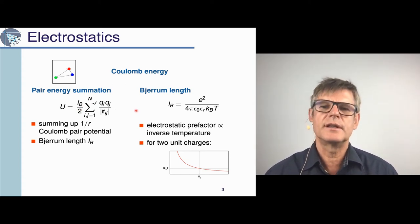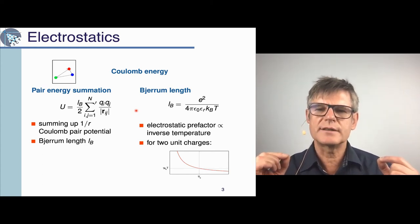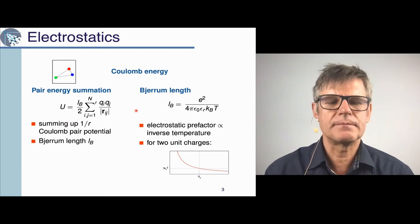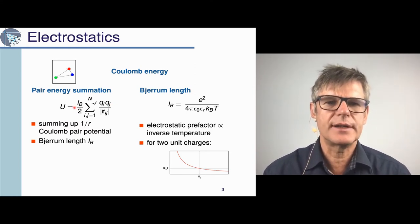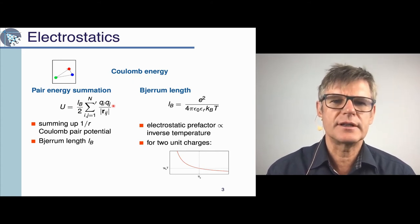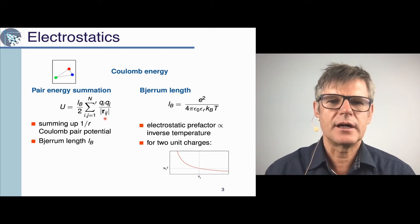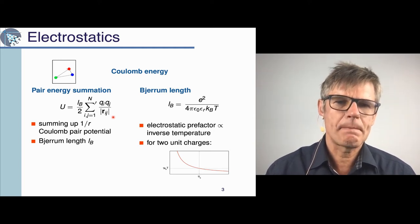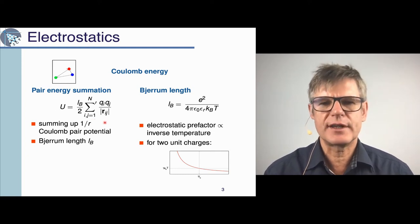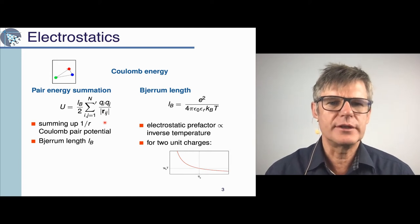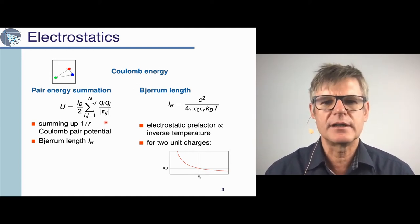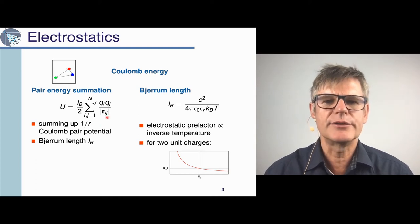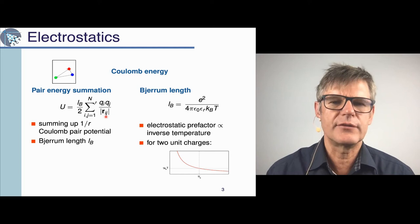The Bjerrum length is defined simply as: if you take two unit charges and ask for the distance at which they interact with k_B T, then this is exactly the Bjerrum length. You can write the pair energy using the Bjerrum length as your pre-factor, and because you divide by R you are left with some interaction. As you have learned in standard Coulomb theory, you sum up the 1/R Coulomb potential by dividing by the distance, excluding the case where i equals j because that would give a zero distance and the expression would blow up.